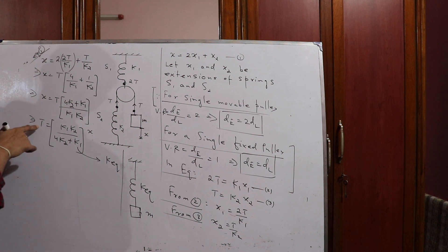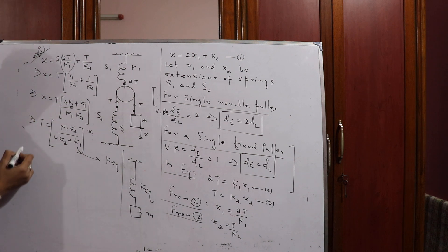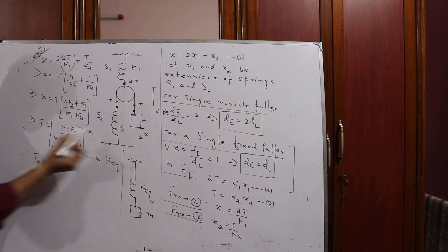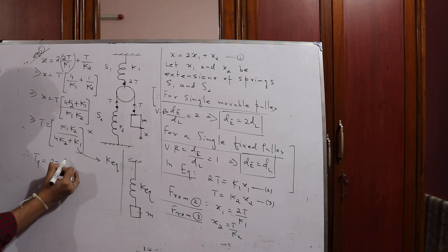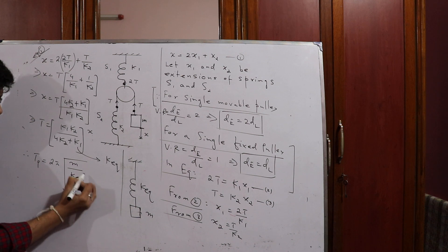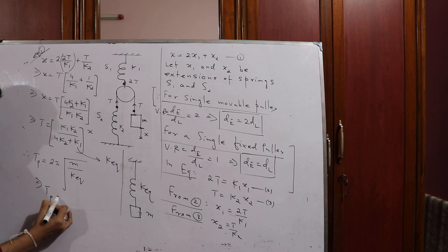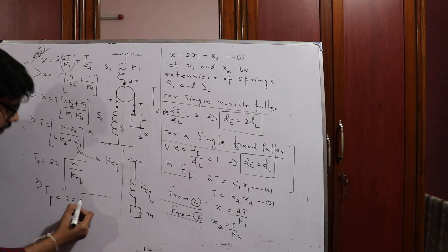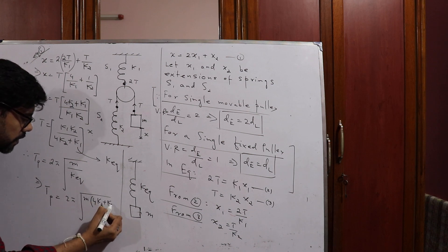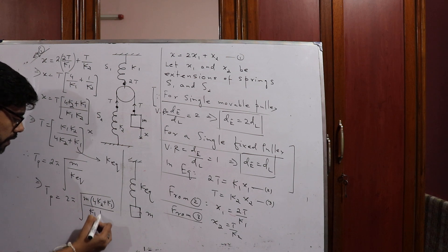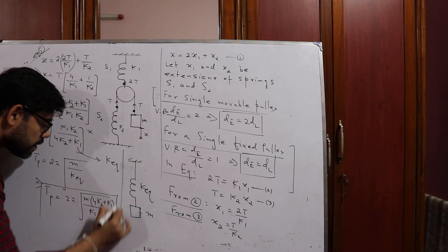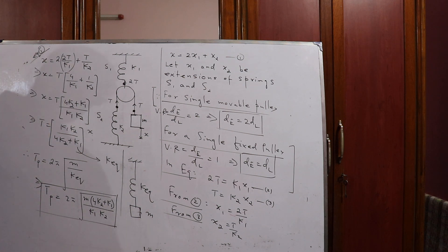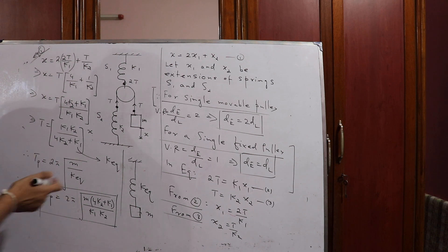Note that T here refers to tension, not time period. The time period of oscillation is found using 2π√(m/k_equivalent). So therefore, time period = 2π√(m / k_equivalent) = 2π√(m(4k2 + k1) / (k1·k2)).